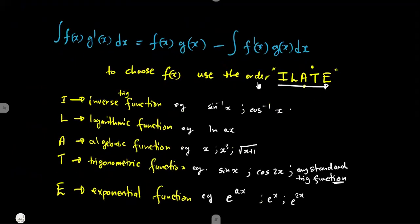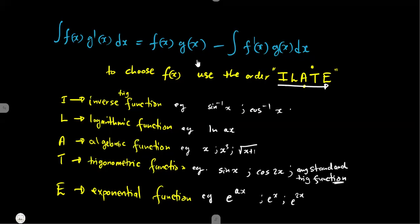So, use the mnemonic ILATE to choose your f(x): I — inverse trig, L — logarithmic, A — algebraic, T — trigonometric, E — exponential. Let's revise more with this information and add it to the introduction of integration by parts that we already covered.